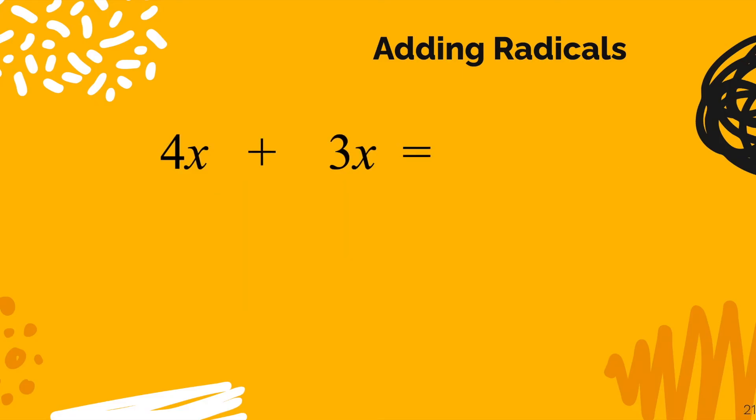Moving on to 4x plus 3x. These are like terms and, of course, you learned in pre-algebra. Then when you take 4x plus 3x, you get 7x. What happens if you have 4 radical 7s and then you add 3 more radical 7s? Well, it's obvious. You simply get 7 radical 7.